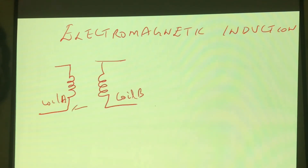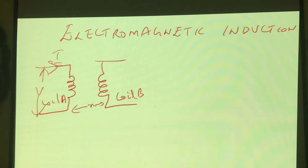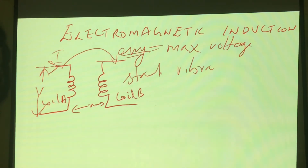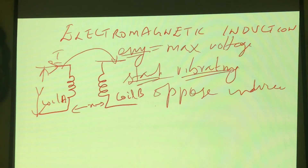These two coils are placed very, very close to each other. For coil A, I am supplying a voltage V — we are connected to a battery, as we learned in the last session on current electricity. Current is passing through this coil, and this current induces an EMF — EMF meaning maximum voltage. Coil B does not have any voltage supply; it is just a coil. But due to the induced EMF, the second coil starts vibrating — to oppose the induced EMF while producing a flux.